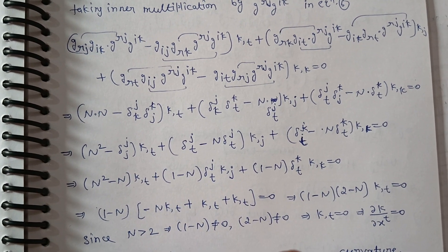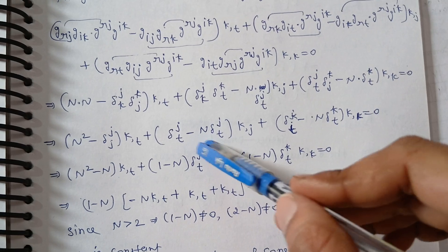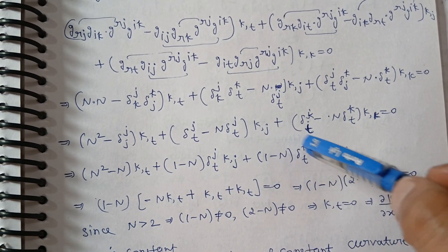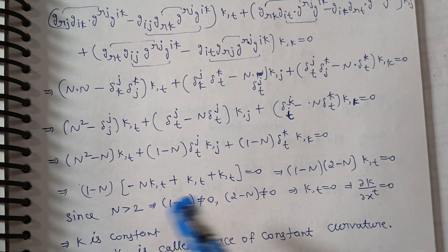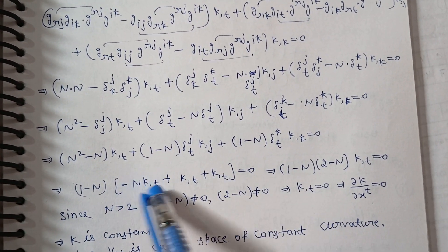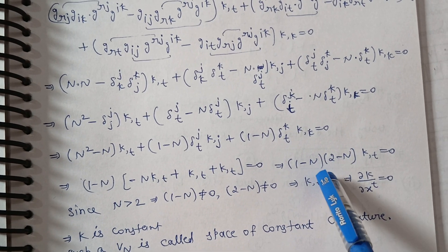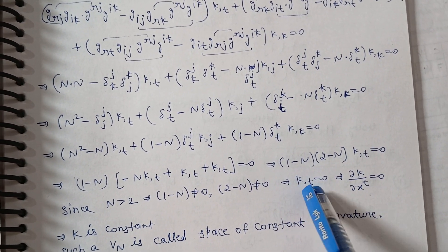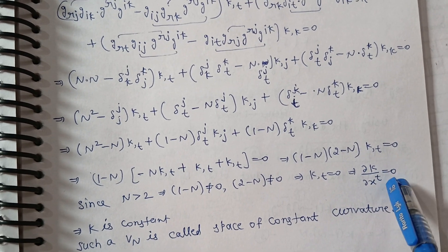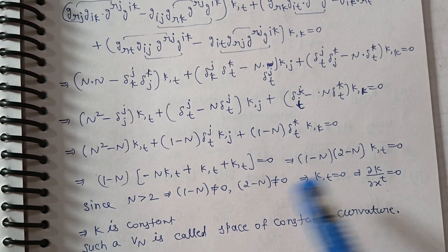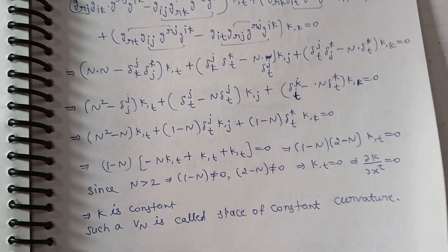Substituting the values and since j equals j, we can write k and t as common. Solving, we get (2 minus 1). Since n is greater than 2, both factors cannot simultaneously be non-zero, so K_,t equals 0. This means the covariant derivative of K is 0, so K is constant — meaning Vn has constant curvature. This completes the proof of Schur's theorem.